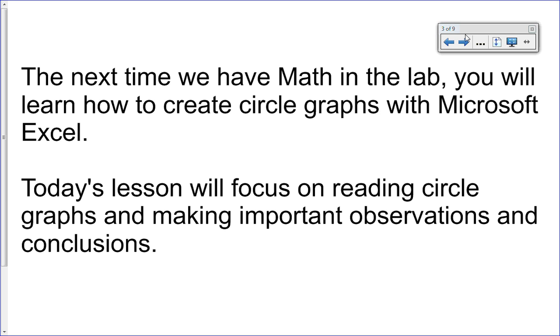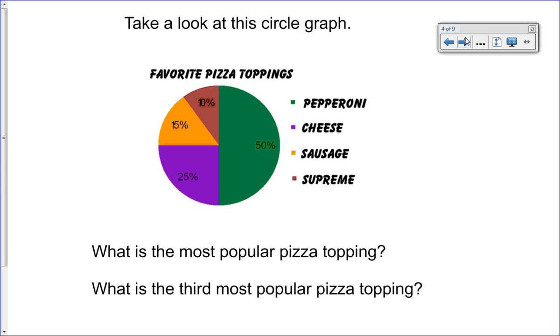Take a look at this circle graph. We've got a clearly defined title, favorite pizza toppings, and we have a legend here which tells us what each color represents. Question number one: what is the most popular pizza topping? Well, clearly it's pepperoni with 50 percent. And question two: what is the third most popular pizza topping? Well, 25 percent falls in second place, so that means that 15 percent sausage is the third most popular pizza topping.